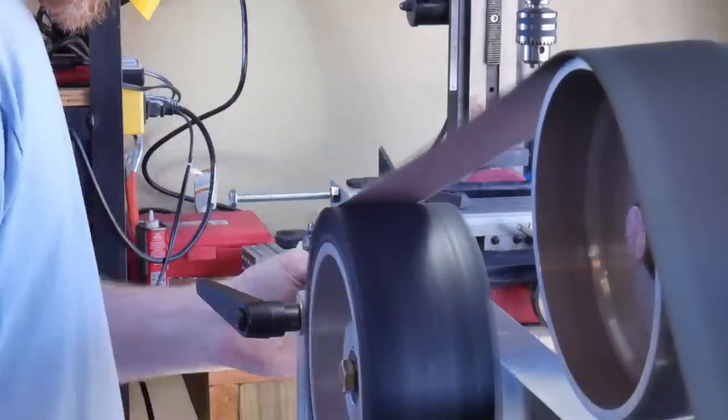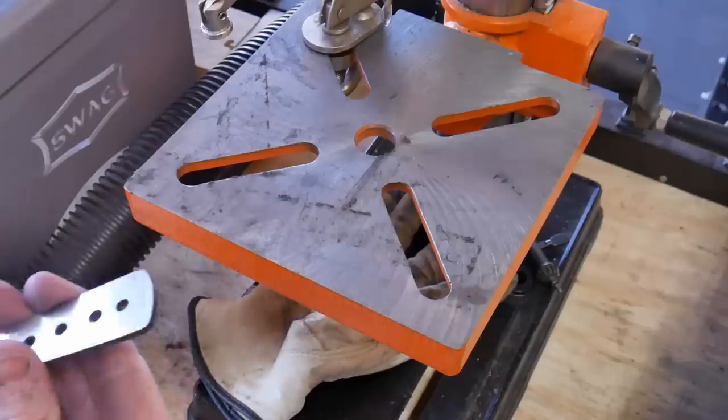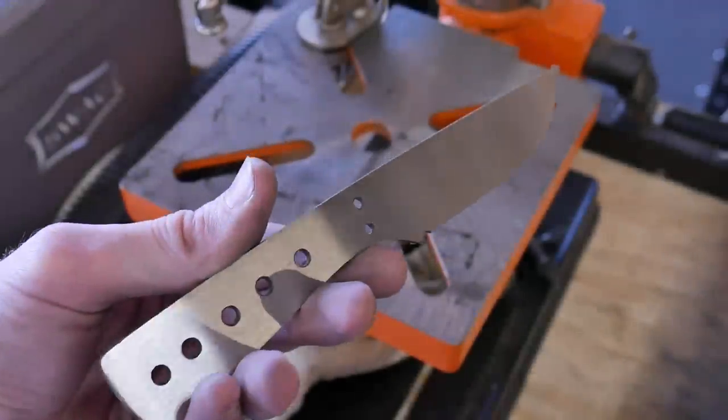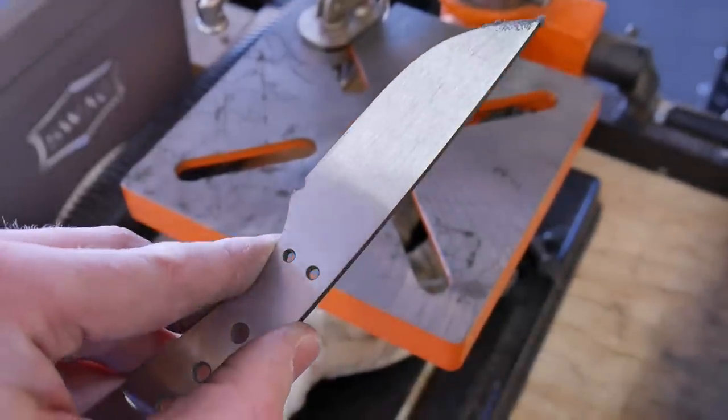After we get this blade nice and smooth, we'll head on over to our next step which is going to be grinding out the bevels. You can see it makes a really nice 360 grit finish there.